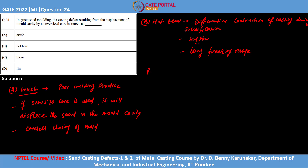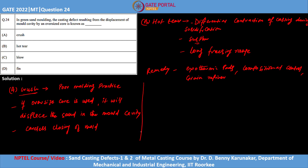As a remedy to avoid hot tearing, you can use exothermic pads, or avoid alloying elements which have impurities - this is compositional control. Sometimes we also add grain refiners to minimize the hot tearing phenomenon. Now coming to option C, which is blow or blow holes.